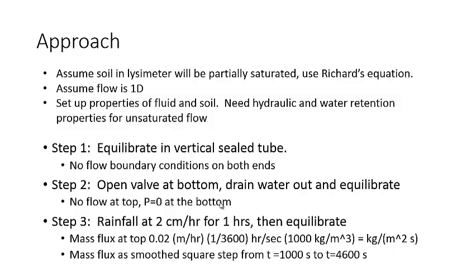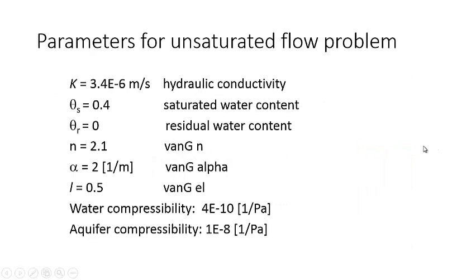When we set this model up, we're going to need to have some properties that we'll use to describe the soil and the water retention characteristics. These are the different properties we'll use. This is the hydraulic conductivity, K = 3.4E-6 m/s. These properties here will be used in the Van Genuchten water retention formula: θs = 0.4, θr = 0, n = 2.1, α = 2 [1/m], l = 0.5. We'll also have the compressibility of the water and the aquifer: water compressibility 4E-10 [1/Pa], aquifer compressibility 1E-8 [1/Pa].